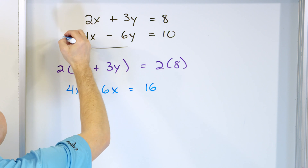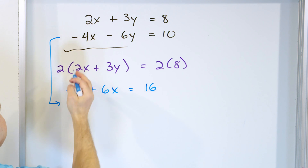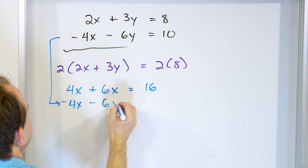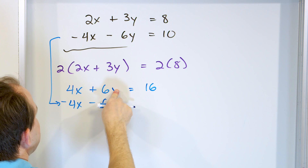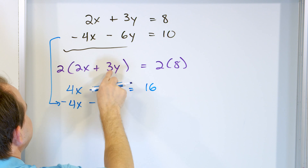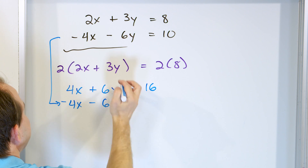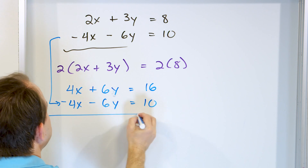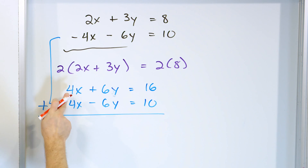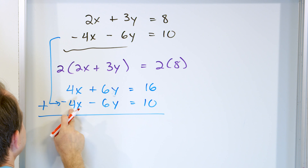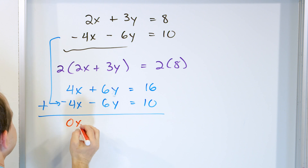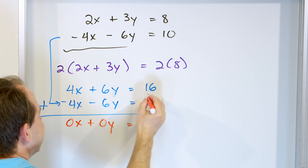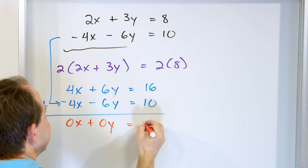Taking the second equation and putting it underneath: negative 4x minus 6y equals 10. Adding both equations together: 4x plus negative 4x gives 0x, and 6y plus negative 6y gives 0y. Adding the right sides, 16 plus 10 gives 26.